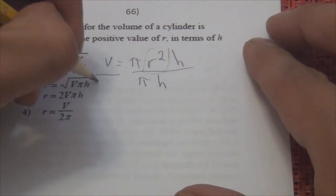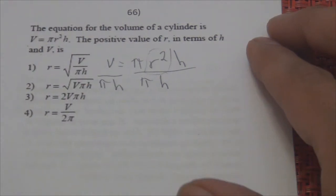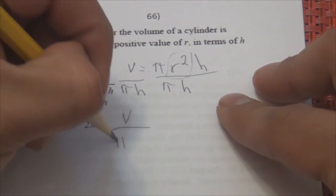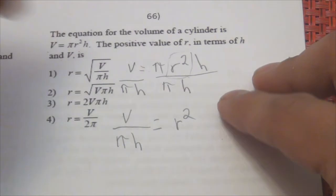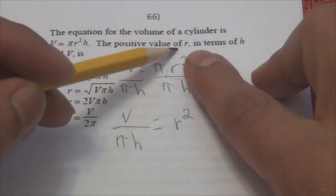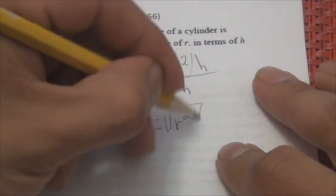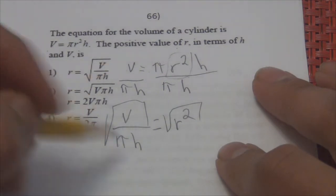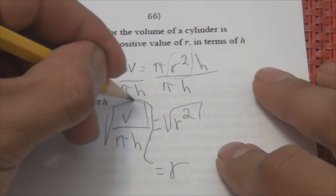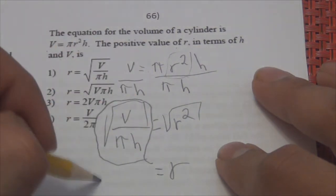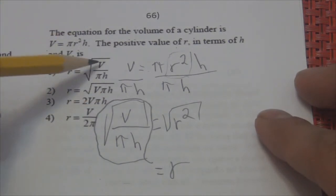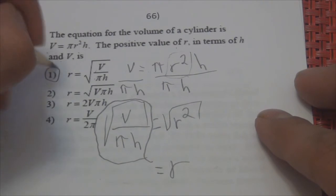I end up with V over pi H equaling R squared. They don't want R squared — they want R. So I take the square root of R squared. R equals the square root of V over pi H. Looking at the choices: square root of V over pi H — and we found our answer.